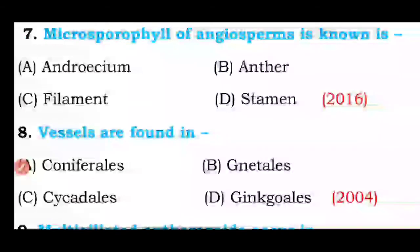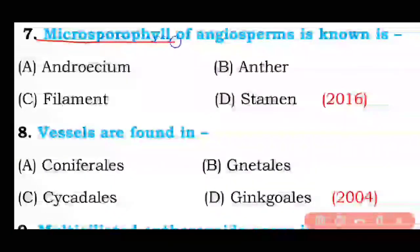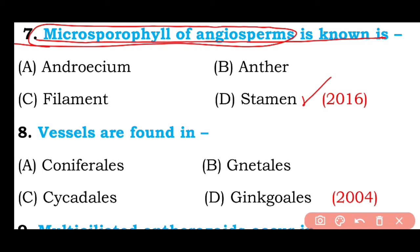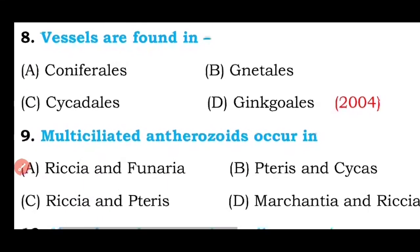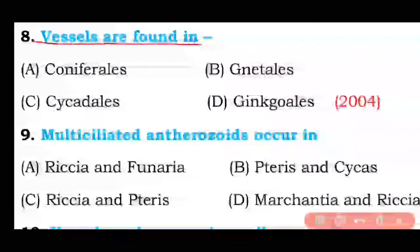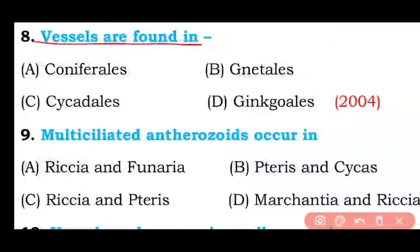Question number seven: Microsporophyll of angiosperm is known as androecium, anther, filament, or stamen? The correct answer is option D — microsporophyll of angiosperm is known as stamen.